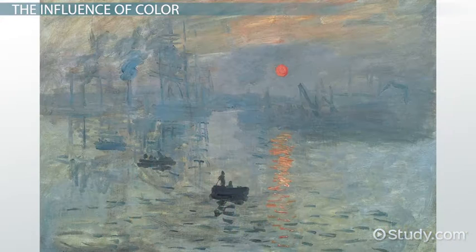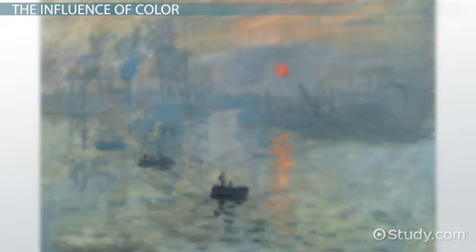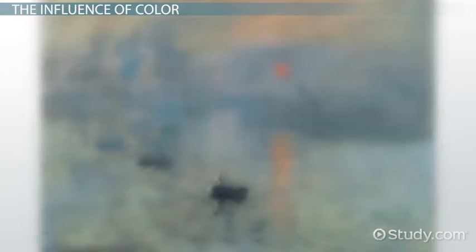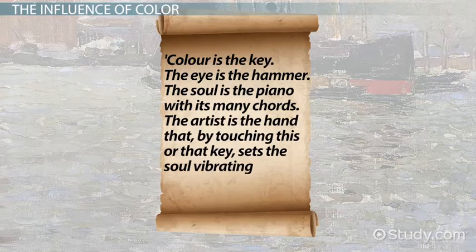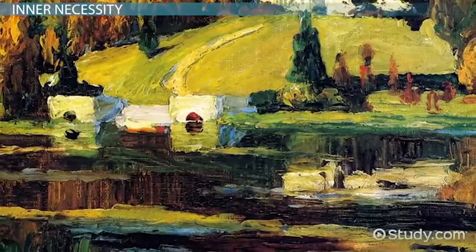Look at a painting by Monet, such as A Sunrise. Now imagine that you had never seen a sunrise, never seen the ocean. The sun becomes an orange globe. The waves are just lines. Kandinsky wrote: 'Color is key. The eye is the hammer. The soul is the piano with its many chords. The artist is the hand that, by touching this or that key, sets the soul vibrating automatically.'